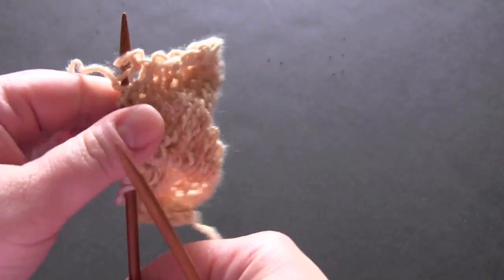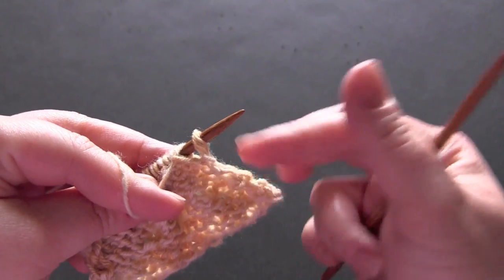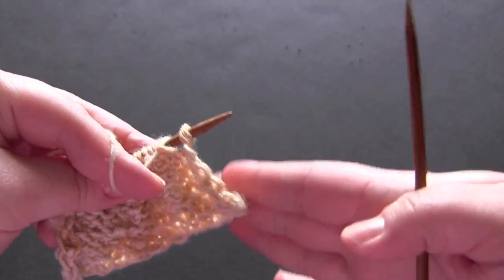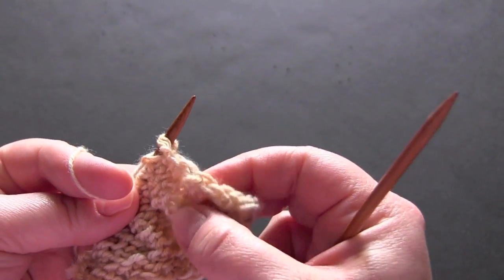So you can see that last stitch was slipped so it's a good idea to have a border or some other stitch pattern along the sides because that makes the edge pretty wonky there.